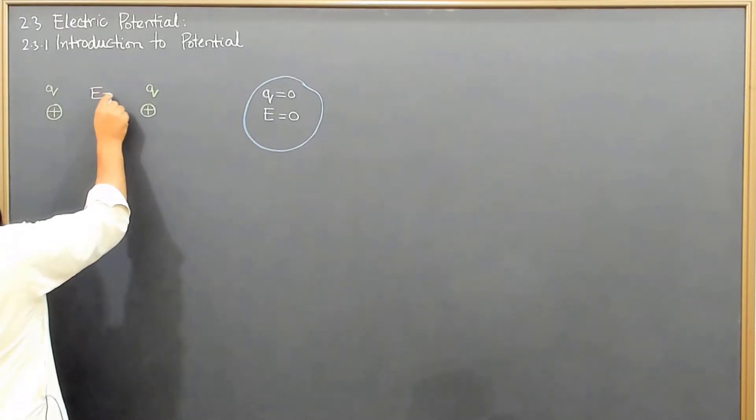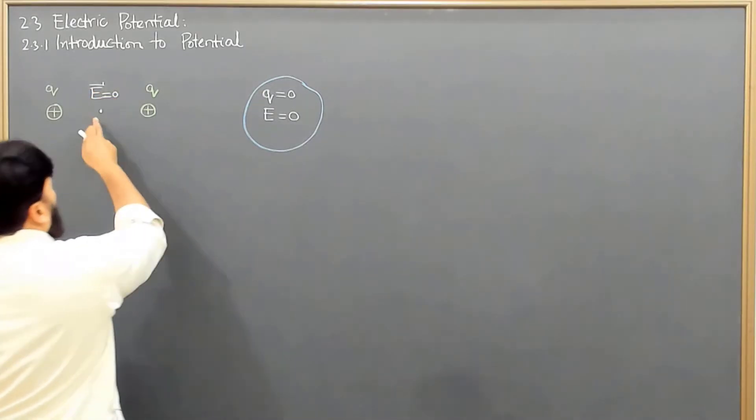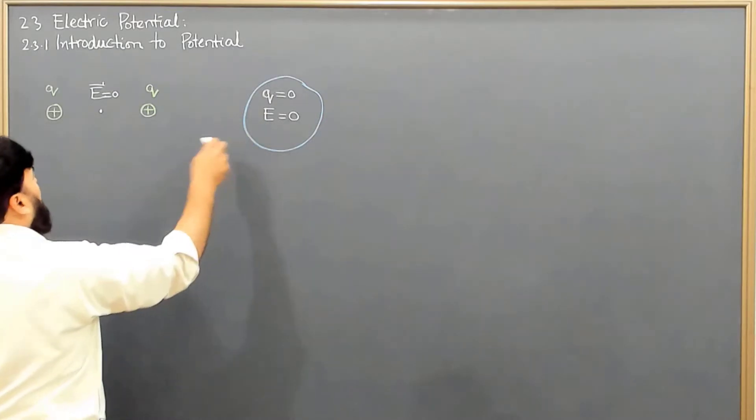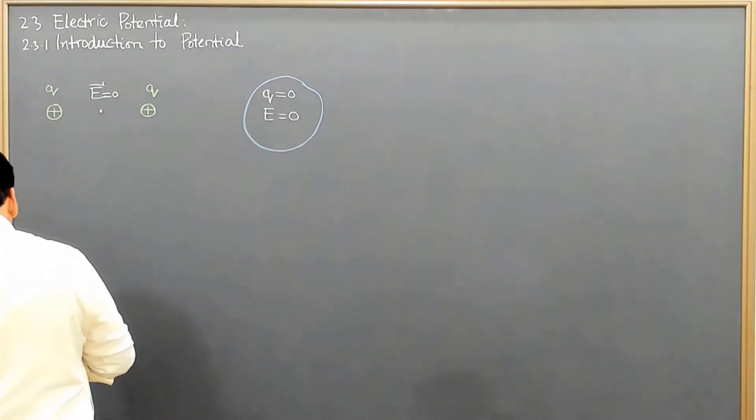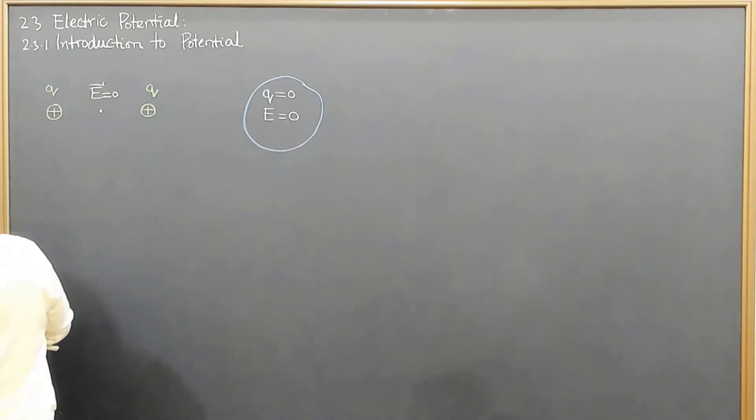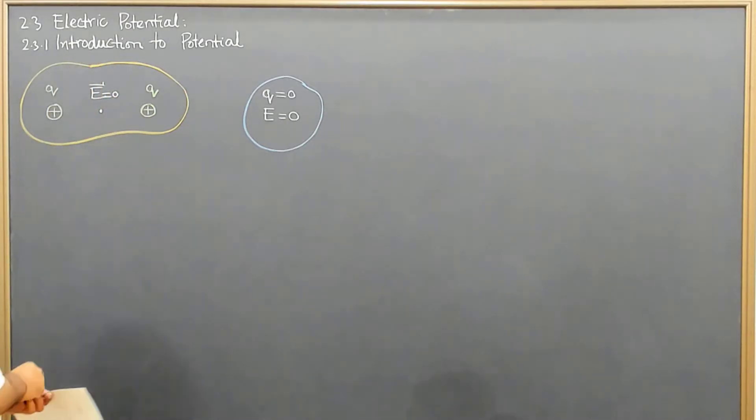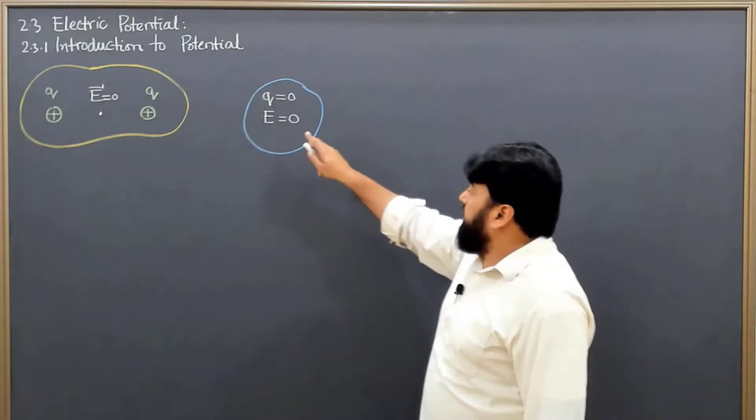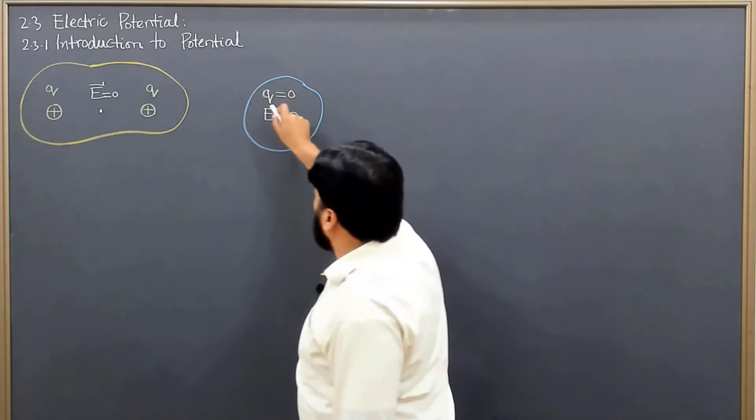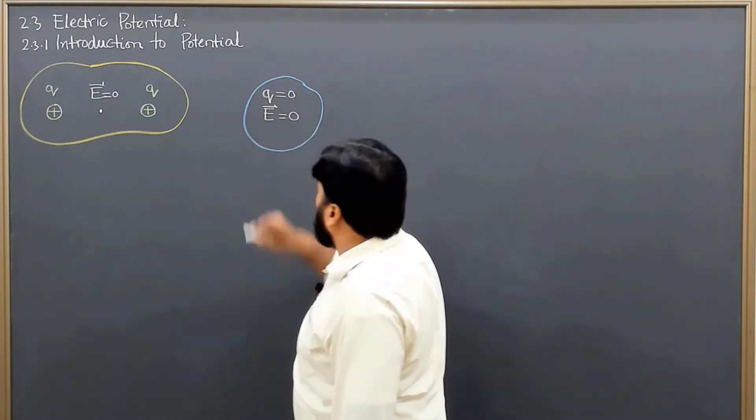Look here and here, these are two different scenarios. For example, we are having this region here, any arbitrary region in which we are having this situation. Here the electric field is zero because there are no source charges.